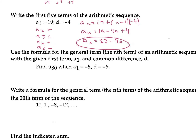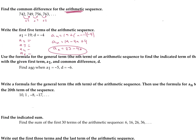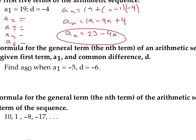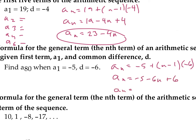Use the formula for the general term of an arithmetic sequence to find the indicated term, given a_sub_1 and common difference d. We have to find the 80th term. So a_sub_n equals a_sub_1, which is negative 5, plus n minus 1 times negative 6. Multiply out: negative 5 minus 6n plus 6. So a_sub_n equals negative 6n plus 1. Plug in 80 for n and we get a_sub_80 equal to negative 479.